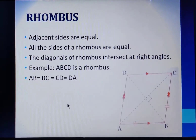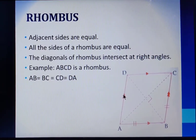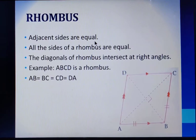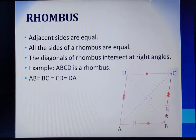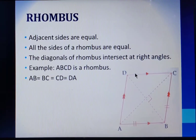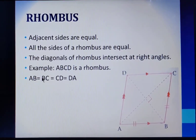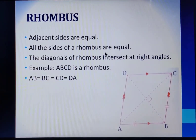Now, let us see the next type, that is rhombus. Rhombus is also a quadrilateral as well as a parallelogram. In a rhombus, adjacent sides are equal. AB and BC are adjacent sides, so AB will be equal to BC. Also, BC and CD are adjacent sides, so BC will further be equal to CD. In this way we will get AB equal to BC equal to CD equal to DA. Hence, all the sides of a rhombus are equal.